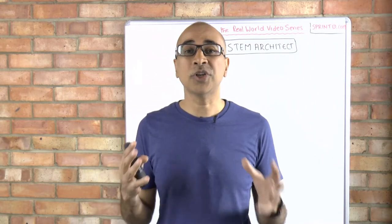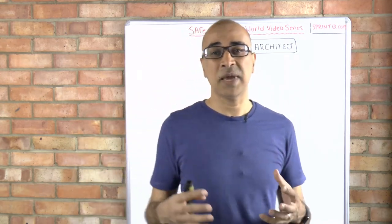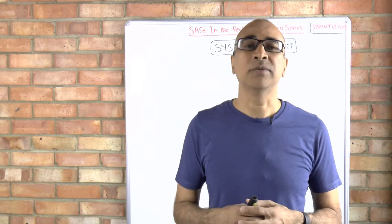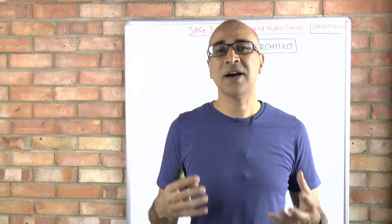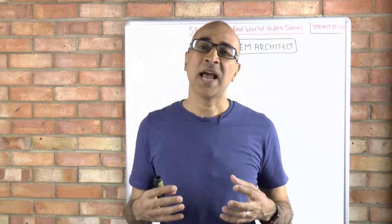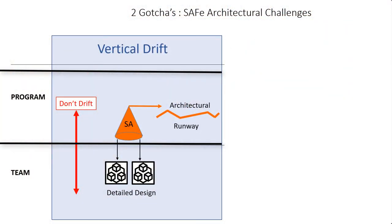There are two gotchas that typically occur that we need to be careful about. The first is what I call vertical drift — this is where architects are going too deep. They are not staying at a high level of architecture; instead they drop down too early, too deep, too soon, and end up doing what I would consider to be almost a detailed design. That's too much information too early, and is one of the key challenges to watch out for.